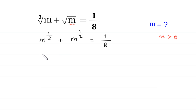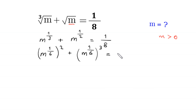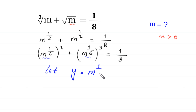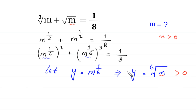Now, m to the power 1 over 3 can be written as m to the power 1 over 6, whole to the power 2, and m to the power 1 over 2 can be written as m to the power 1 over 6, whole to the power 3, equal to 1 over 8. We suppose that m to the power 1 over 6 equals y, meaning y is the sixth root of m. Since m must be greater than 0, y must also be greater than 0.